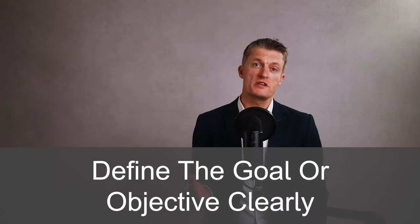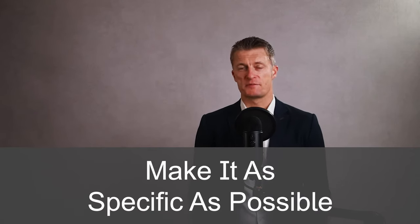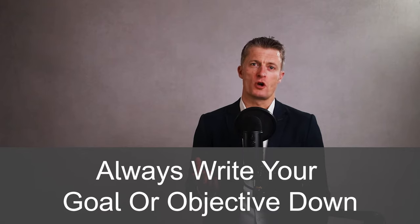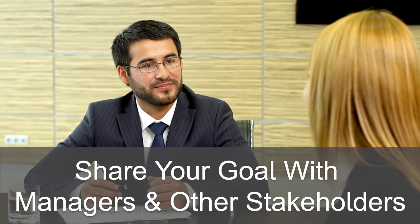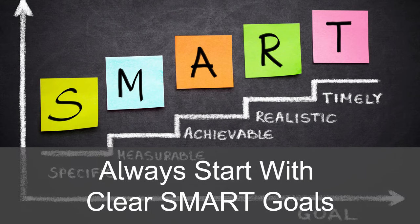Define the goal or objective clearly — make it as specific as possible. A good test: will a stranger understand exactly when you've reached your goal? Always write your goal or objective down. Writing forces you to think about and articulate your goal more clearly. Share your goal with your manager and other important stakeholders. Writing it down and circulating your goals will reduce future issues such as goal creep or changing expectations, and will also ensure your goals tie into the bigger picture goals of the company and other departments. Always start with clear, SMART goals or objectives.